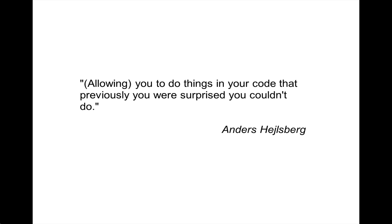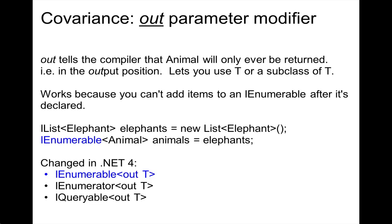That was the problem addressed in .NET 4.0. As Anders Hejlsberg said: covariance and contravariance is all about allowing you to do things in your code that previously you were surprised that you couldn't do. In .NET 4.0 we have covariance done with the `out` parameter modifier. `out` tells the compiler that the type will only ever be in the output position — it lets you use T or a subclass of T. This works because you can't add items to an IEnumerable after it's declared. So the IList of Elephant can now be assigned to an IEnumerable of Animal, and the IEnumerable interface has been changed in .NET 4 to include the `out` modifier. Several interfaces have been changed in .NET 4 to support covariance.